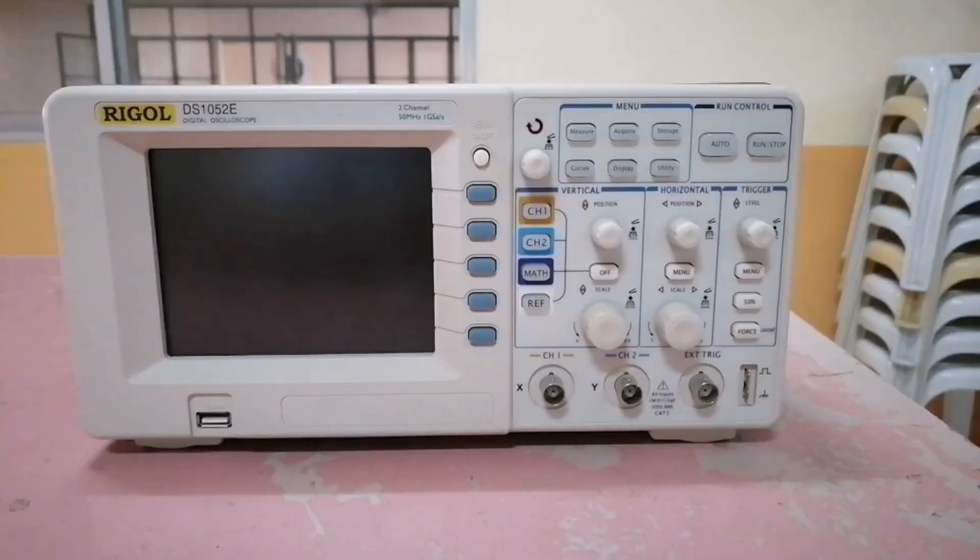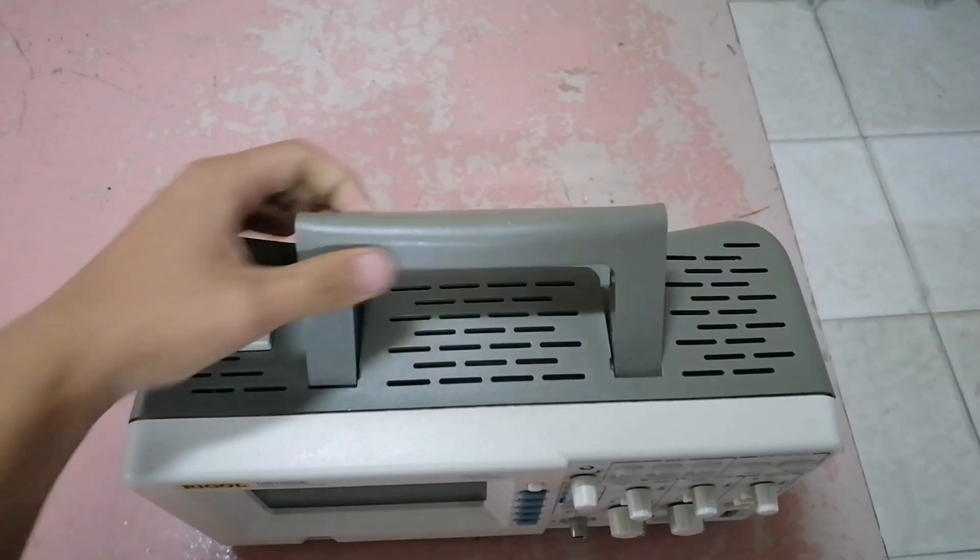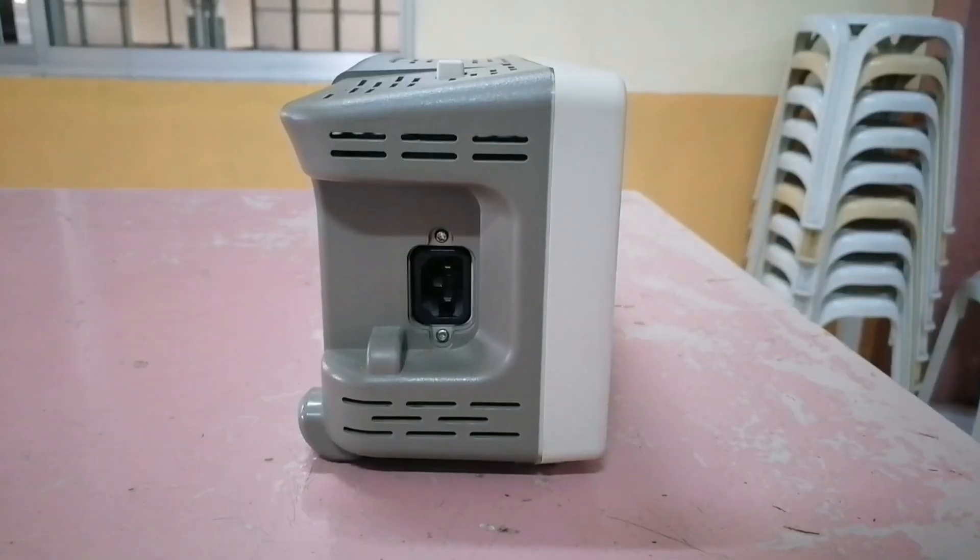So here's the overview of the scope. On the top, we have the handle. On the left side, we have the power input.